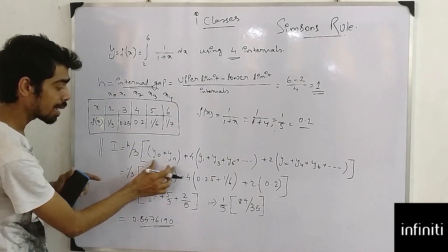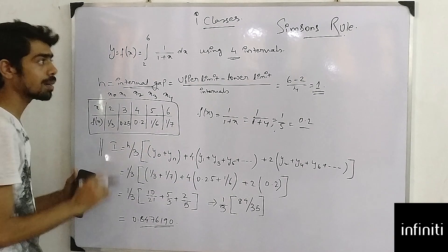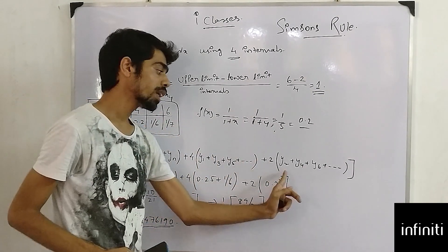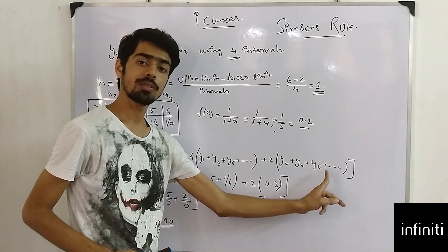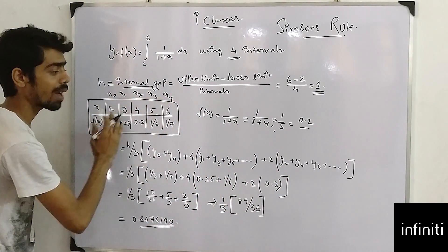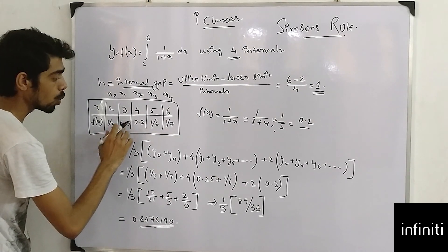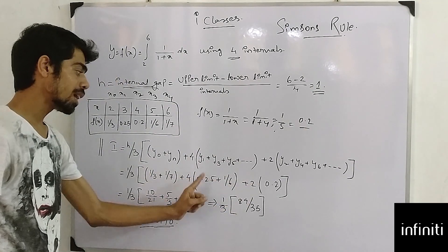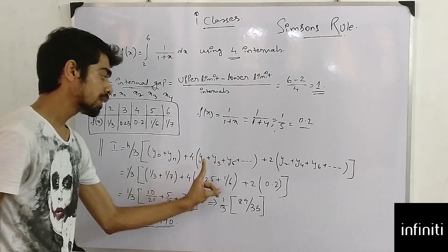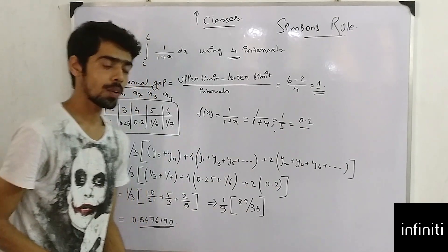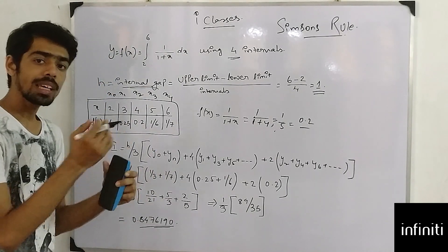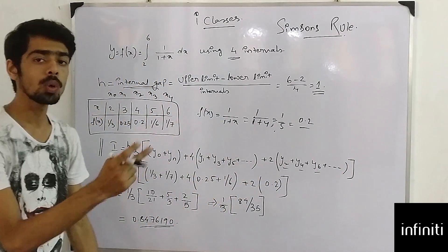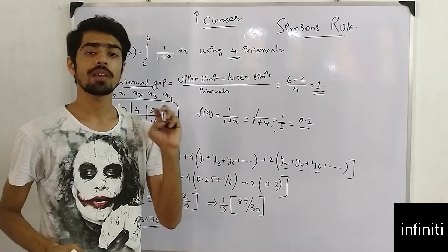Now in Simpson's rule, what we have to do is multiply 2 with the even numbers, with the even gapping values of y like y2, y4, y6, y8, y10, and so forth. And we will multiply 4 with the odd gapings of y. So the even gapping of y, y2, y4, y6, we multiply with 2. For the odd gapping we multiply with 4. This is the way to learn Simpson's formula.